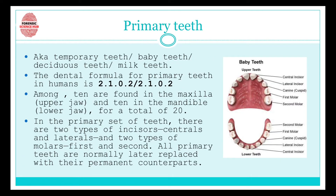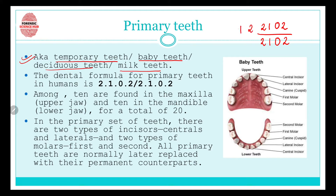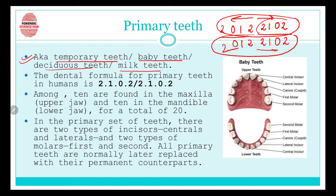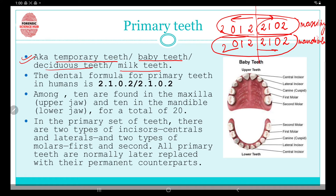Primary teeth are also known as temporary teeth, baby teeth, deciduous teeth, and milk teeth. The dental formula for primary teeth is 2102 over 2102, which represents the upper jaw, and similarly 2102 over 2102 for the lower jaw — that is the maxillary and mandibular teeth respectively.